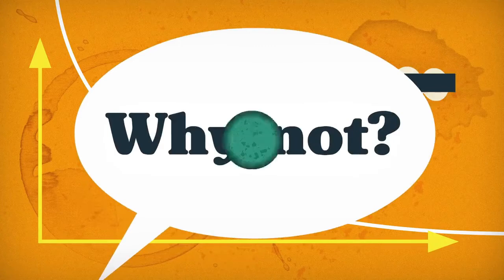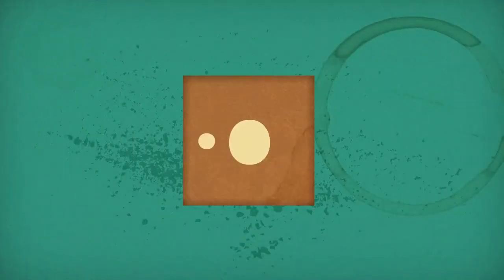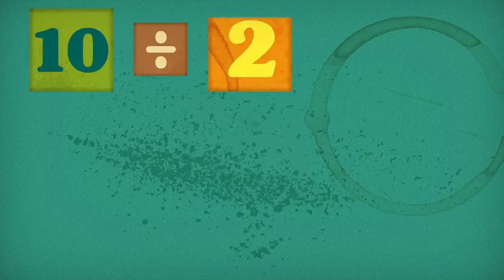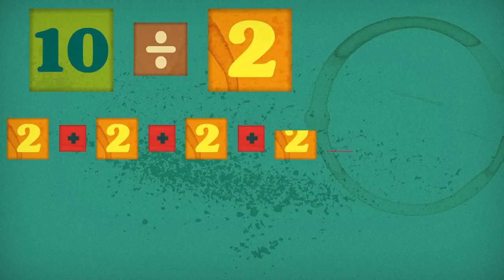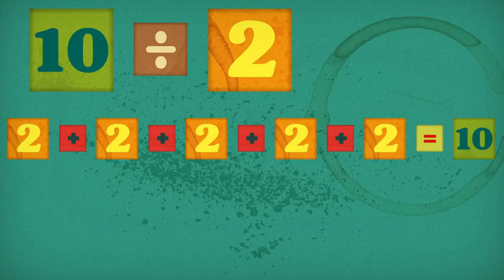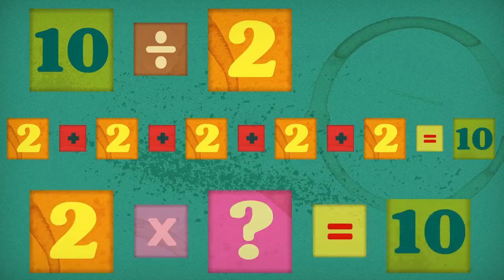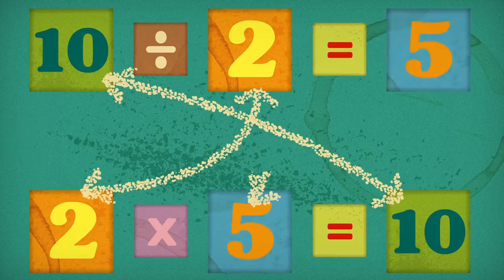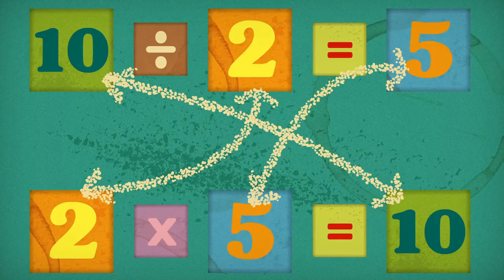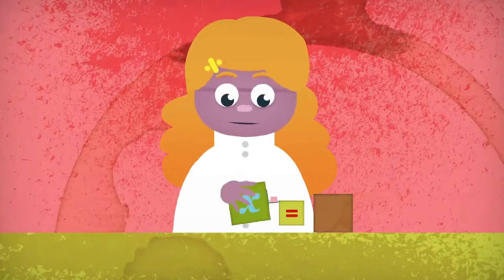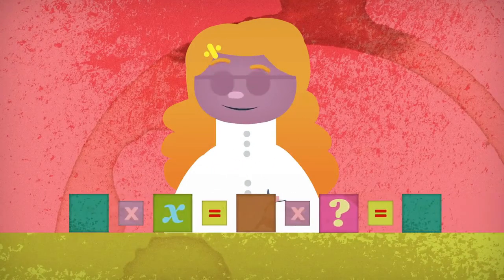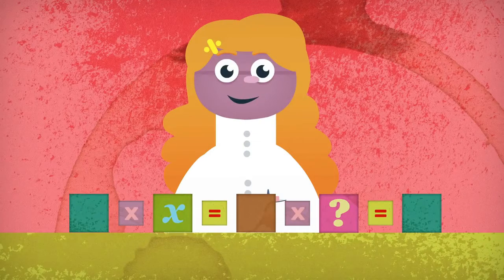Why not? Well, let's take a closer look at what division really means. 10 divided by 2 could mean: how many times must we add 2 together to make 10? Or, 2 times what equals 10? Dividing by a number is essentially the reverse of multiplying by it. If we multiply any number by a given number x, we can ask if there's a new number we can multiply by afterwards to get back to where we started. If there is, the new number is called the multiplicative inverse of x.